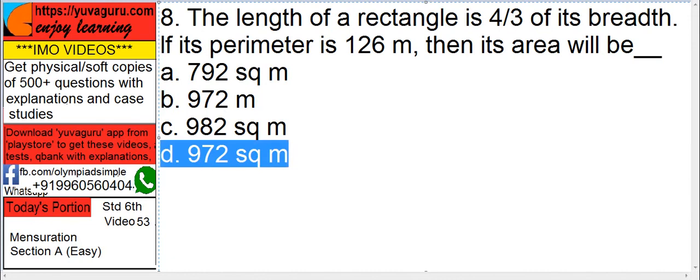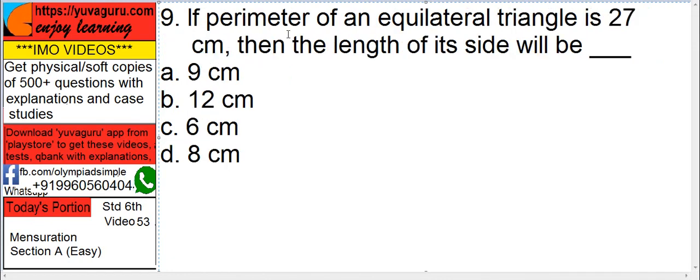Perimeters. Next is: if the perimeter of an equilateral triangle is 27 centimeters, then the length of its side will be?